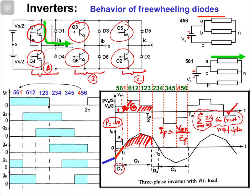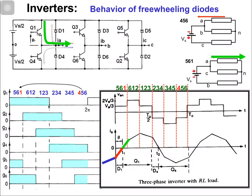Diodes are active only for inductive load. For resistive load, diodes are not required because a resistive load does not store energy. Only the inductive load stores energy, which must then be delivered back to the source. The diode conducts because the main switches cannot conduct in the reverse direction.